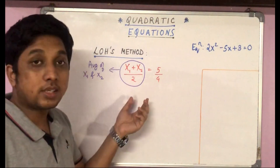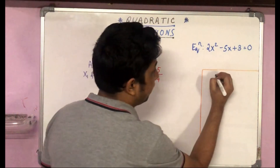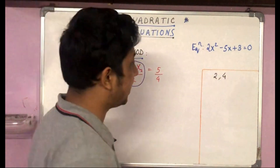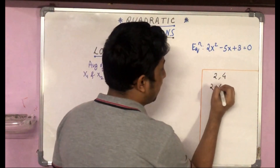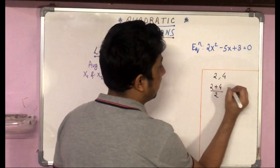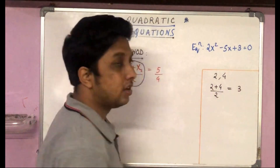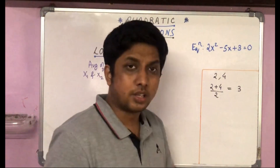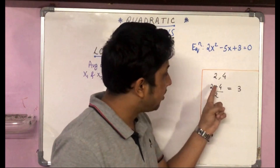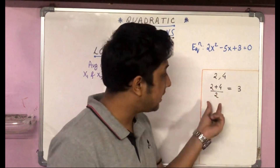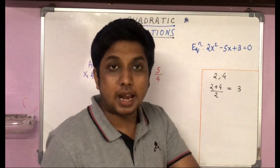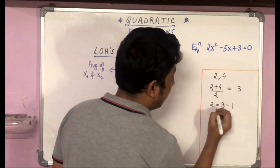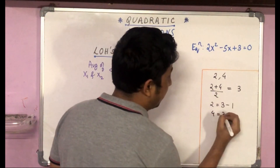Now let's focus on this concept. Take two numbers: 2 and 4. Their average is (2 + 4)/2 = 6/2 = 3. Now, can we express 2 and 4 as 'three minus something' and 'three plus something'? Yes — 2 can be expressed as 3 − 1, and 4 can be expressed as 3 + 1.